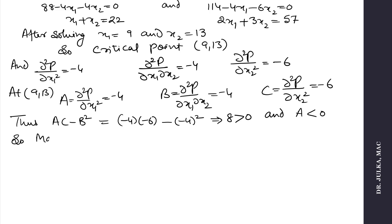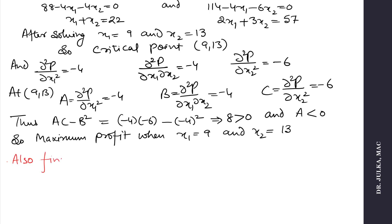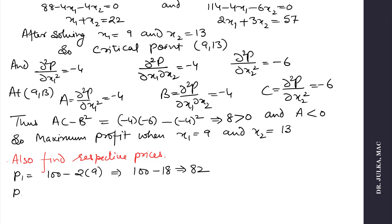So maximum profit occurs at x1 equals 9 and x2 equals 13. To find the respective prices, we put x1 and x2 in the demand function: p1 equals 100 minus 2 times 9 which equals 82, and p2 equals 125 minus 3 times 13 which equals 86. So profit is maximum when x1 is 9, x2 is 13, p1 is 82, and p2 is 86.